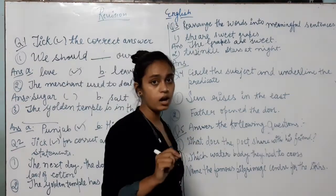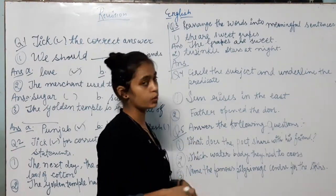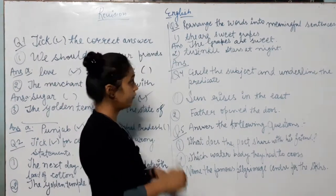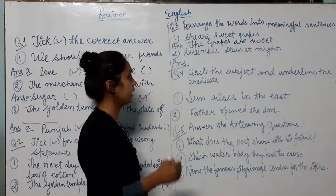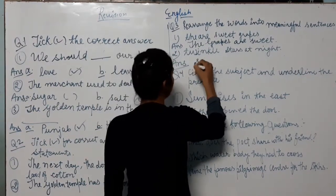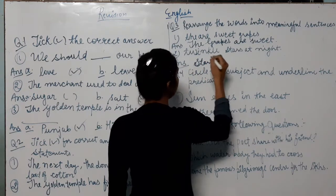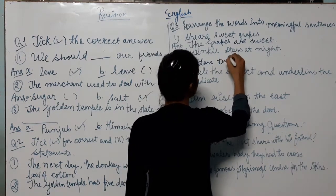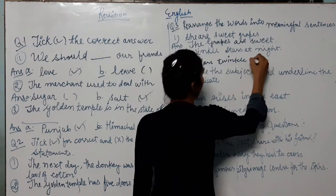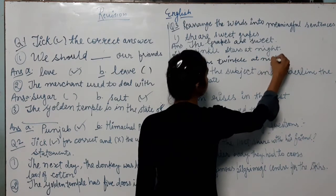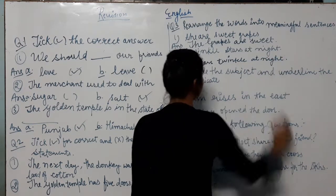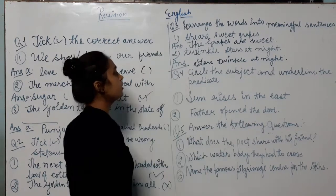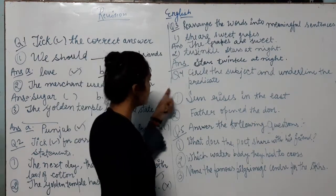Question number second: twinkle stars at night. It is not meaningful, so it is not sentence. And we make—we have to make the sentence. So, stars. First letter is capital. Stars twinkle at night. And with full stop. So it is right sentence.